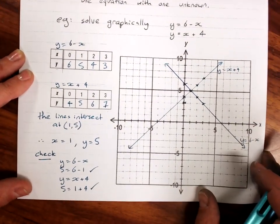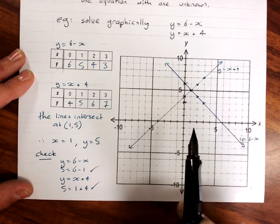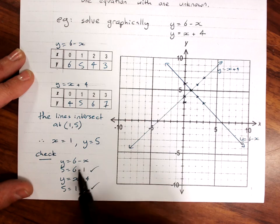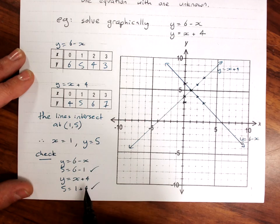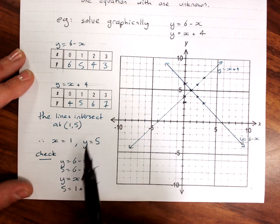So to solve simultaneous equations graphically, graph them both. Don't sketch. Graph. Find the point where they intersect. Check that those values of x and y work for both equations and give your solution for x and y.